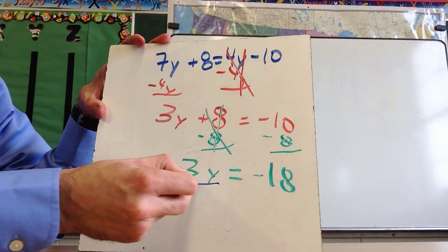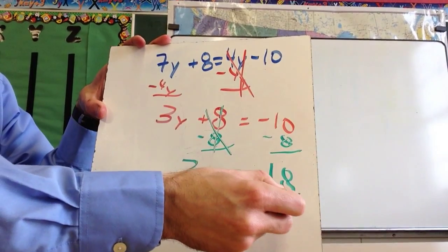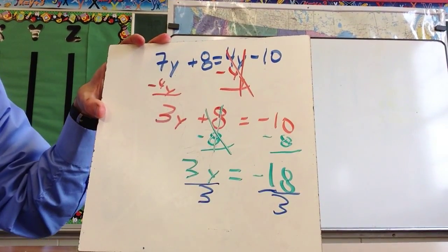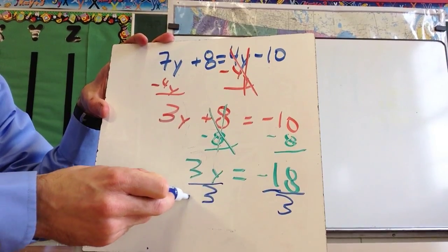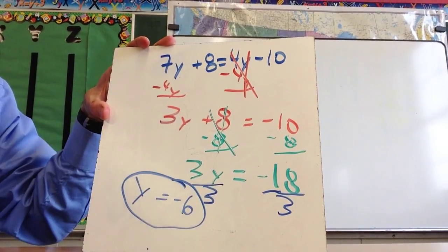And then finally, the last thing I need to do is divide by the coefficient that's in front of the y. In this case, that's a 3. And negative 18 divided by 3 is negative 6. So y equals negative 6.